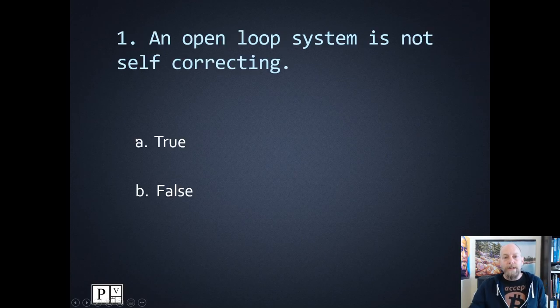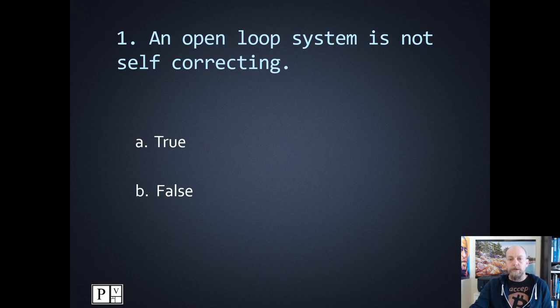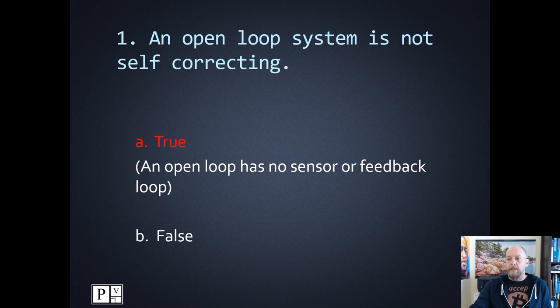Okay, I'm hoping everybody's cool with all of these different terms as we go through. If you're really stuck, you're more than welcome to text me over the weekend and we can go over specific things. Number one: an open loop system is not self-correcting. An open loop system is basically a manually controlled system — it has no sensor or feedback loop. That is true.